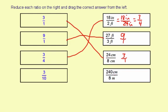240 centimeters to 8 meters. Different units here. So we want to change the meters to centimeters. And there are 100 centimeters in a meter. So this is the same thing as 240 centimeters to 800 centimeters.